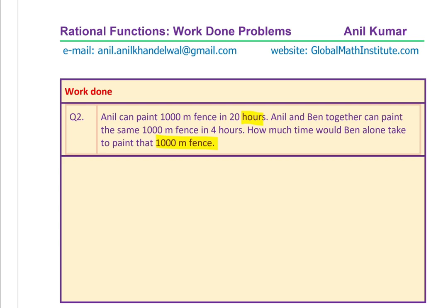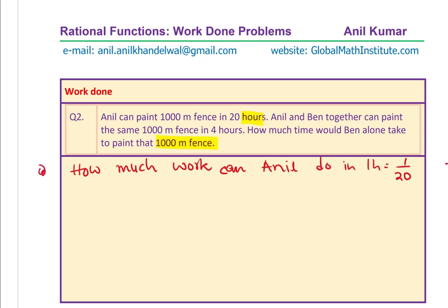We will calculate how much work each person can do in 1 hour. Anil takes 20 hours for the whole job, so in 1 hour Anil does 1/20 of the whole work. That is Anil's rate. We do not know how long Ben would take alone, so let that time be B hours, giving Ben's rate as 1/B.